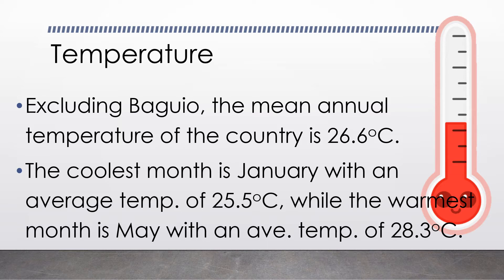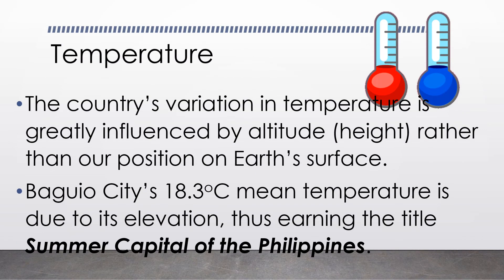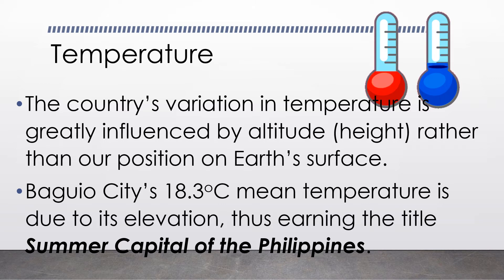The coolest month is January with an average temperature of 25.5 degrees Celsius, while the warmest month is around May with an average temperature of 28.3 degrees Celsius. The country's variation in temperature is greatly influenced by altitude or height rather than our position on Earth's surface. Since Baguio City is located 1,500 meters above sea level, its mean temperature is 18.3 degrees Celsius, thus earning the title Summer Capital of the Philippines.